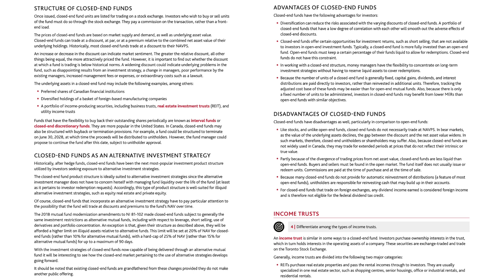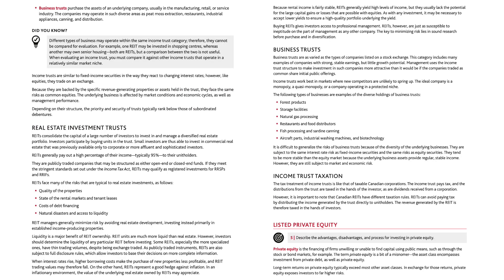Income trusts. An income trust is similar in some ways to a closed-end fund. Investors purchase ownership interests in the trust, which in turn holds interest in the operating assets of a company. These securities are exchange-traded and trade on the Toronto Stock Exchange. Generally, income trusts are divided into two major categories. REITs purchase real estate properties and pass the rental incomes through to investors; they are usually specialized in one real estate sector such as shopping centers, senior housing, office or industrial rentals, and residential rentals. Business trusts purchase the assets of an underlying company, usually in the manufacturing, retail, or service industry. The companies may operate in such diverse areas as peat moss extraction, restaurants, industrial appliances, canning, and distribution.